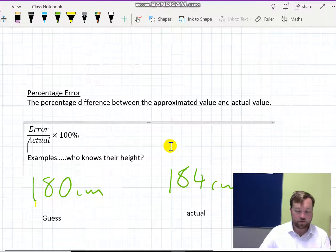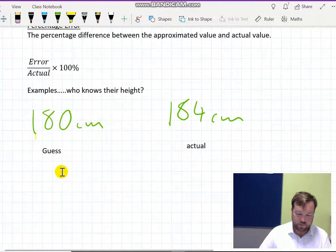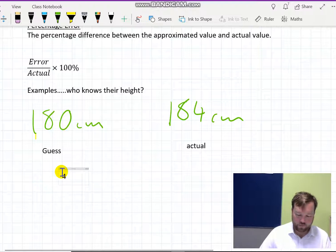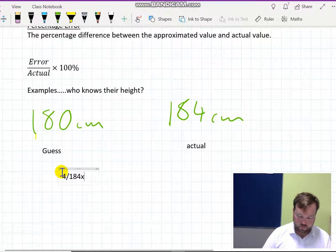Now, clearly, there's an error of 4 centimeters. So the way we calculate percentage error is we do the error divided by the actual answer times 100. So my percentage out is 2.179%.